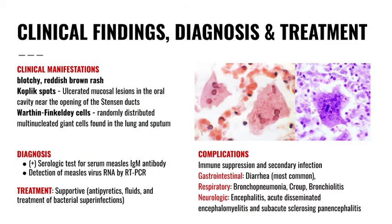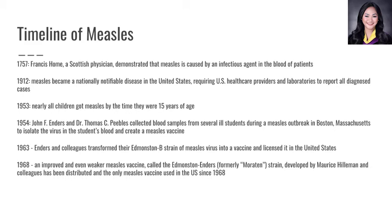For its clinical manifestations, it has a blotchy reddish-brown rash, Koplik spots, and Warthin-Finkeldey giant cells found in the lung and sputum. Its diagnosis is a positive serologic test for serum measles IgM antibody, and its complications include immune suppression and secondary infection.